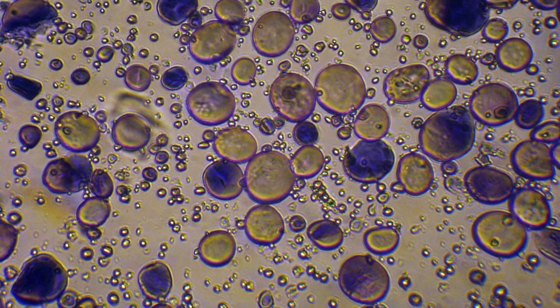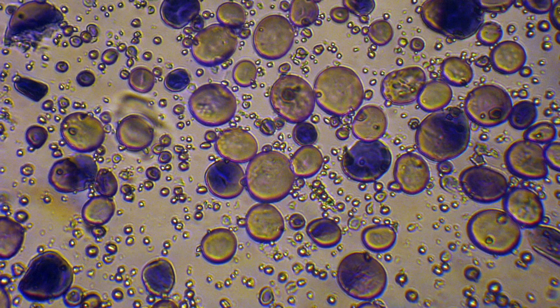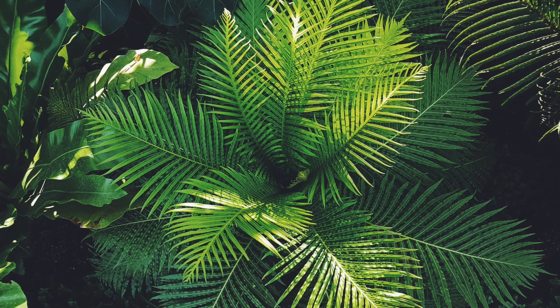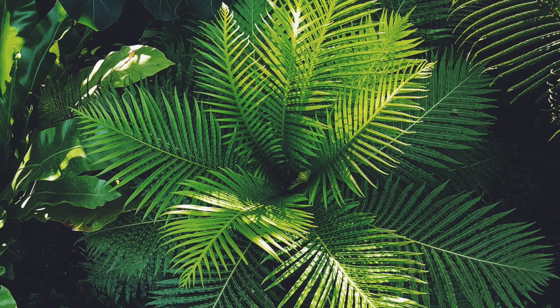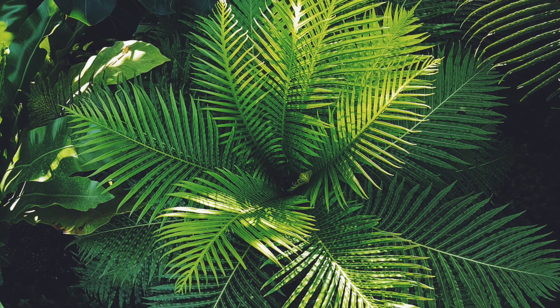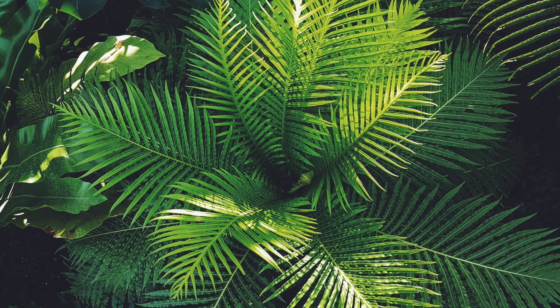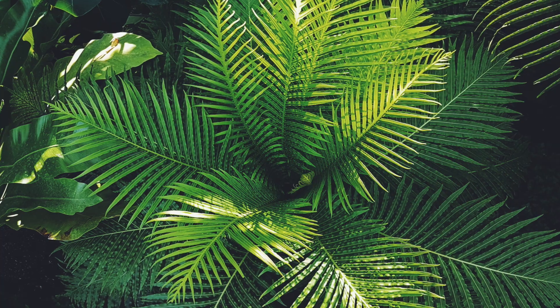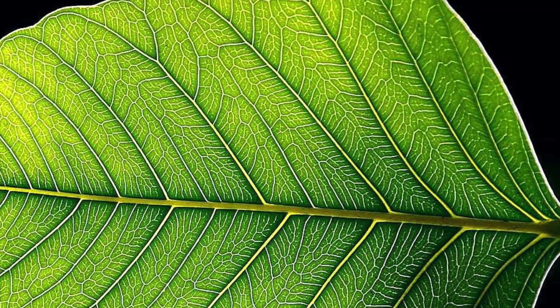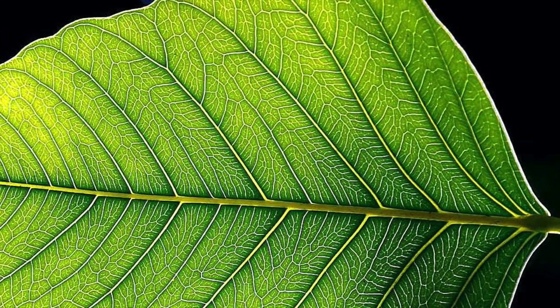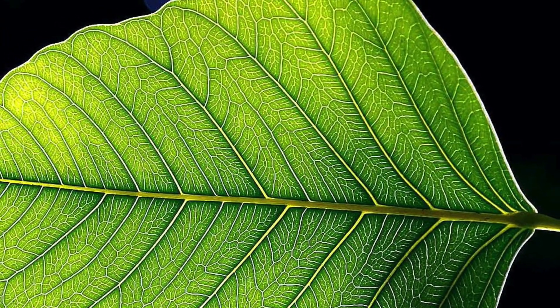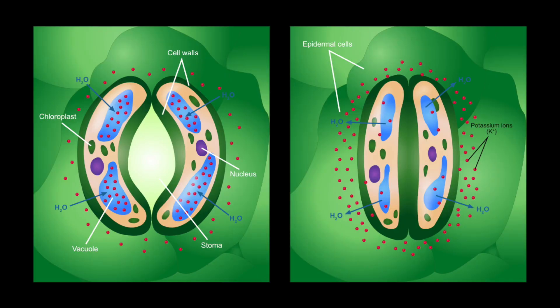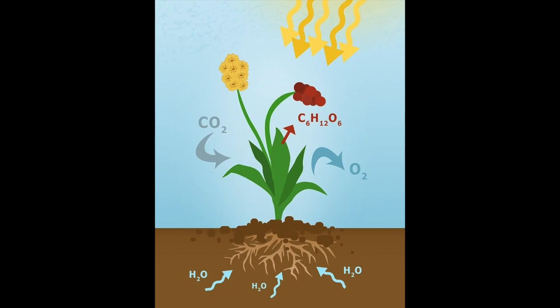For photosynthesis to happen there are many leaf adaptations. The leaves in plants normally have a large surface area for light to fall on. They also contain a lot of chlorophyll for photosynthesis. They have air spaces which allow carbon dioxide in and oxygen out. They have veins which bring plenty of water to the cells. They have guard cells that open and close the stomata to regulate gas exchange. These adaptations mean that they can photosynthesise as much as possible.